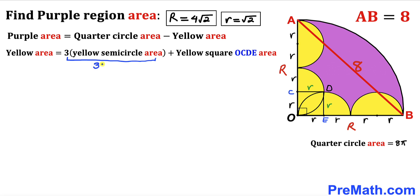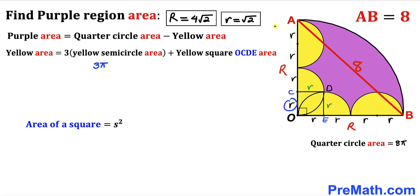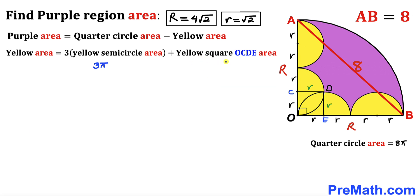Since we have three yellow semicircles, their total area is 3π. For the yellow square OCDE, using A = s² with s = r = √2, the area is (√2)² = 2. So the yellow square area is 2. Therefore the total yellow area is 3π + 2.